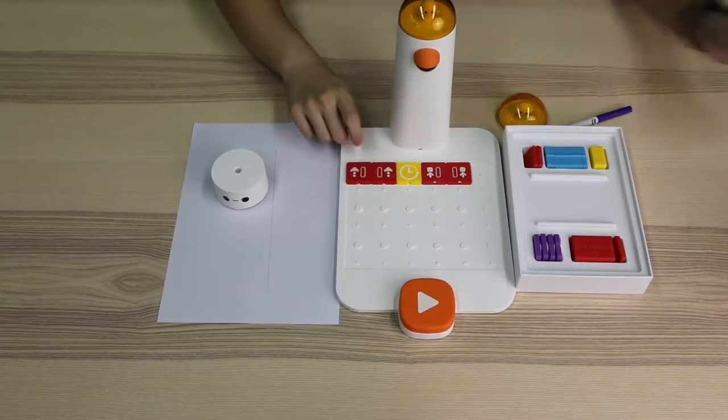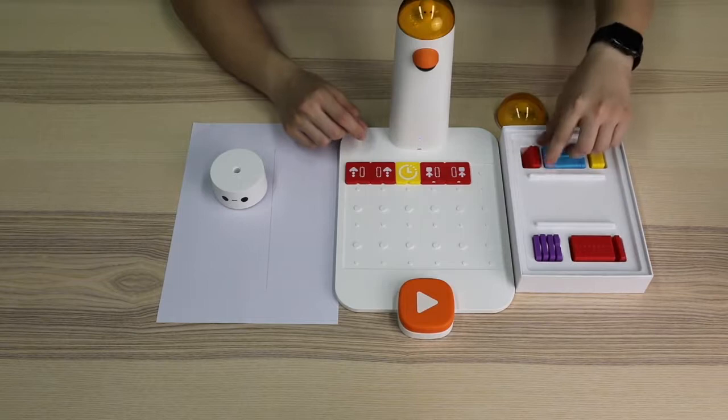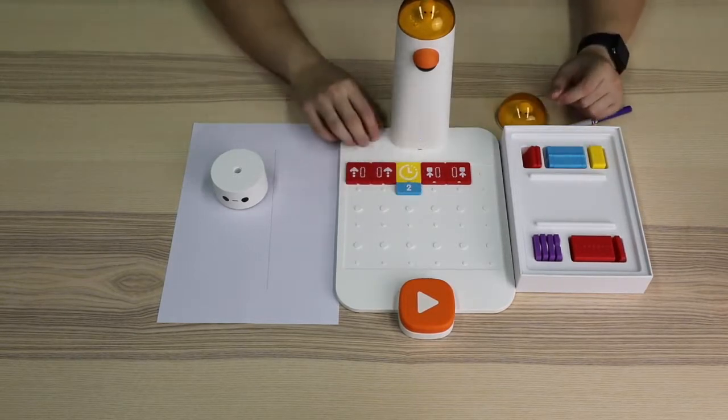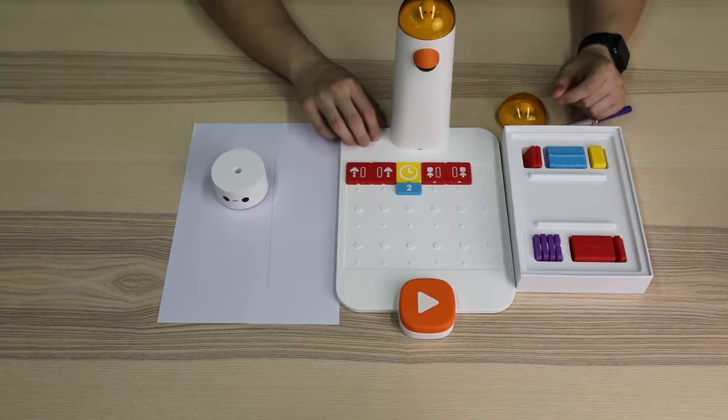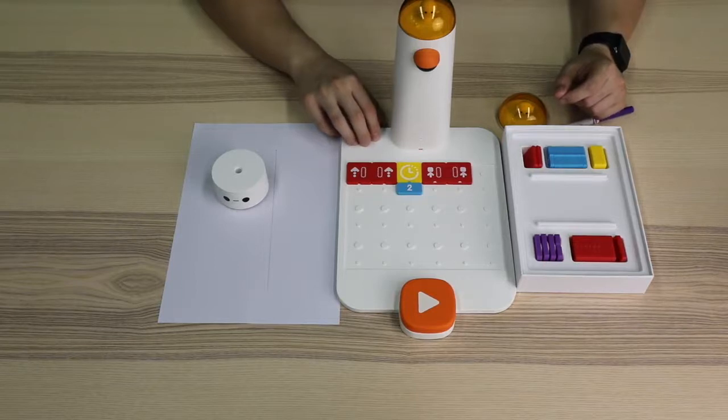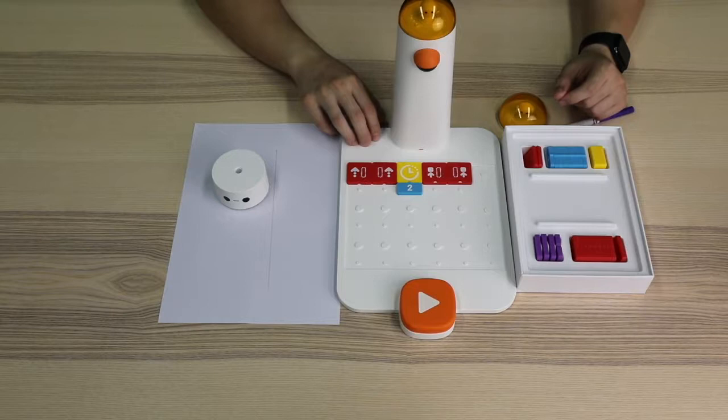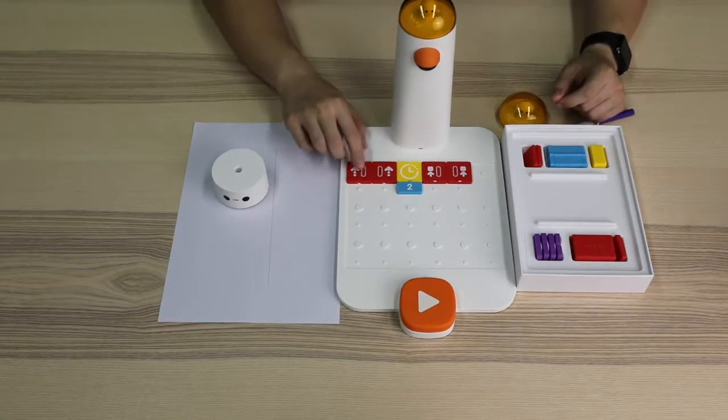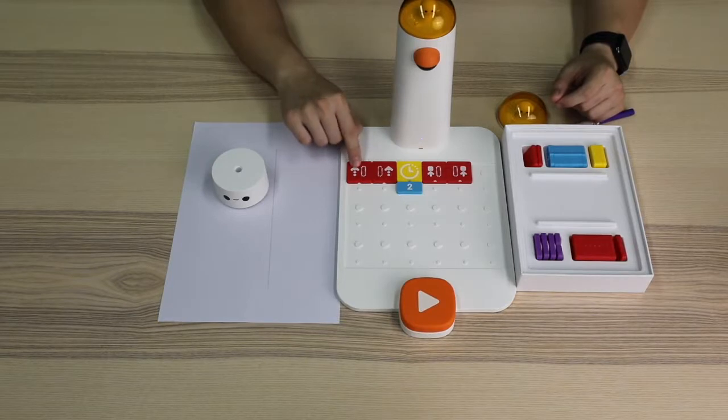What needs to be emphasized here is that the waiting blocks can be used with number blocks. When we don't attach number blocks, it means maintain a state for one second. If we attach number block two, it means maintain a state for two seconds, and so on. It will maintain the state for one second to six seconds. Simply put, waiting block will maintain the state before it for a specific time.